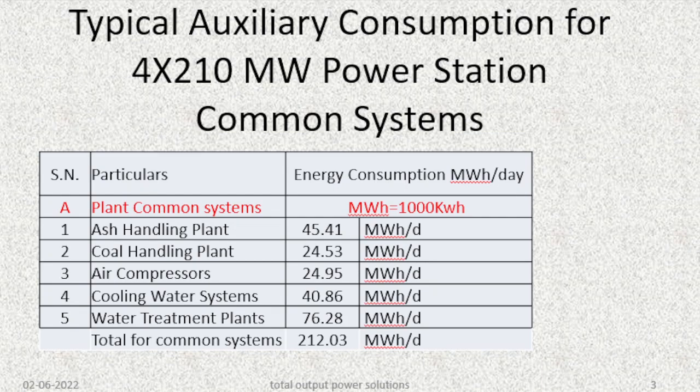The table shows a typical auxiliary consumption for a 4 x 210 MW power plant common systems. The power plant common systems are generally ash handling plant, coal handling plant, air compressors, cooling water systems, and water treatment plants. The energy consumption for each of these is mentioned in the table. The total energy consumption for all common systems is around 212.03 MWh per day.